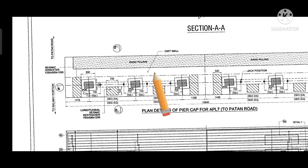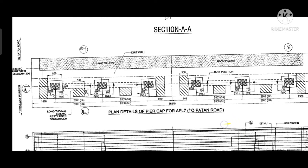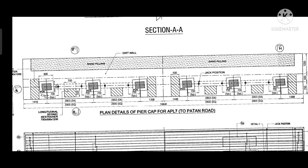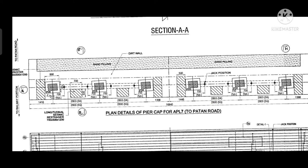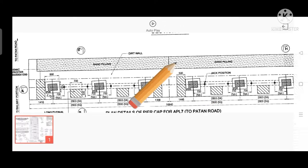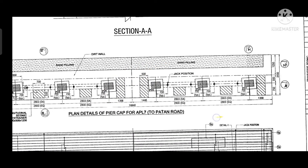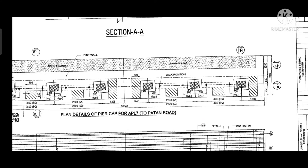This is the dirt wall. The main function of the dirt wall is to transfer the load from the approach slab to the pier. Between the dirt wall and earth wall we are filling the soil, which we can easily see in the drawing. This is the soil filling.